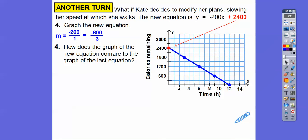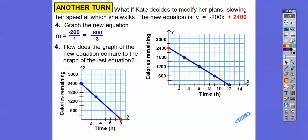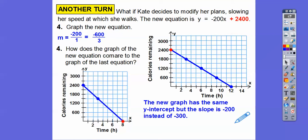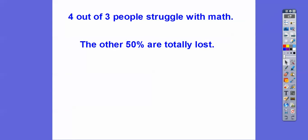How does that graph of the new equation compare to the graph of the last equation? So let's get those two equations together right there. Well, notice they both start at 2,400, so they both have the same y-intercepts. This one's just going down faster because she wants to burn 300 calories per hour, and this one's going down slower, which is the slope, you guys. It's going down 200 right there. So the new graph has the same y-intercepts, but the slope is negative 200 instead of negative 300. All right, you guys. I hope that makes sense, and take care.